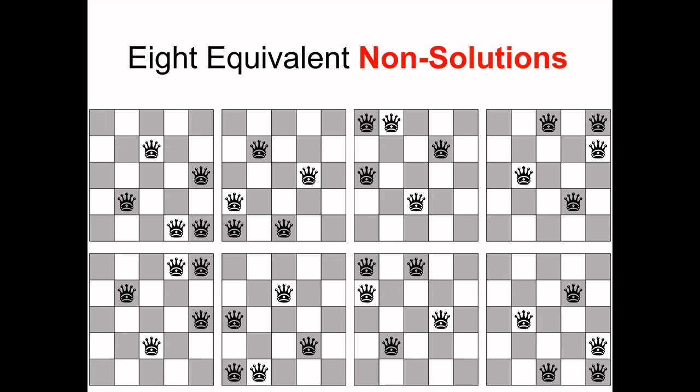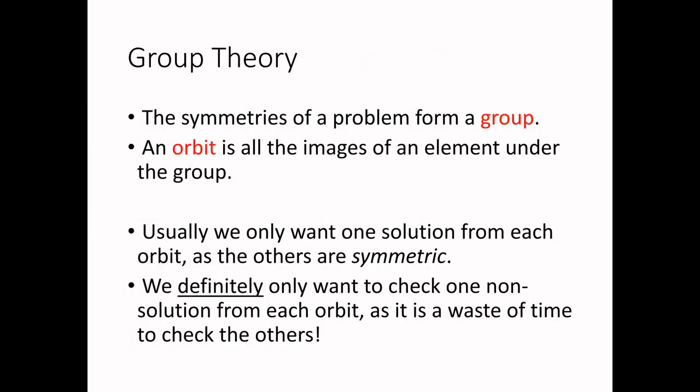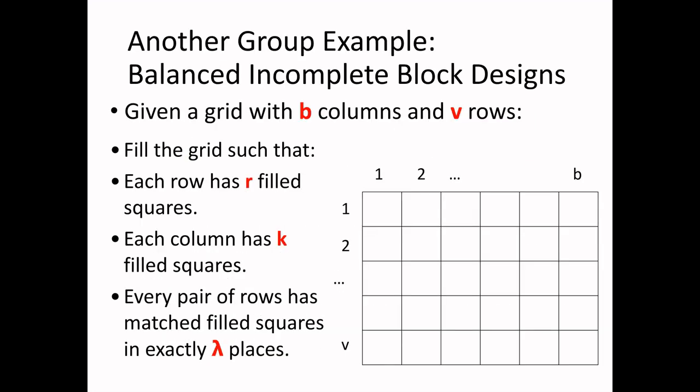If a computer is trying to find all solutions to this problem, we only usually want one of these eight — we don't want all of them. So we want a way of filtering out the ones we don't want. Also, when the computer is searching and proves something isn't an answer, we don't want it checking the other seven, because if one isn't an answer, they're all not an answer. This is a group, and we use the word orbit to mean: given a solution, what are all the other solutions?